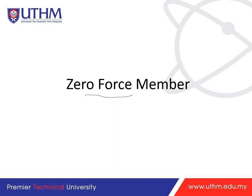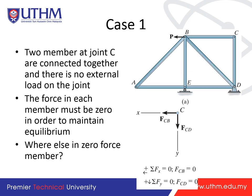Some members in a structure can be zero force members. Case 1: when two members at a joint are connected together and there is no external load on that joint, the force in each member must be zero to maintain equilibrium. At joint C in this case, FBC = 0 and FCD = 0.